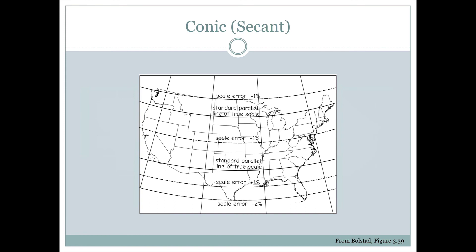Looking specifically at the United States as a secant example, we would have two standard lines of parallel — one near the north of the United States and the other near the south. Along those two solid lines labeled 'standard parallel line of true scale,' there would be no map distortion. That distortion would increase between those two lines of parallel and also increase outside of them, but right along those two lines of parallel there is no distortion.